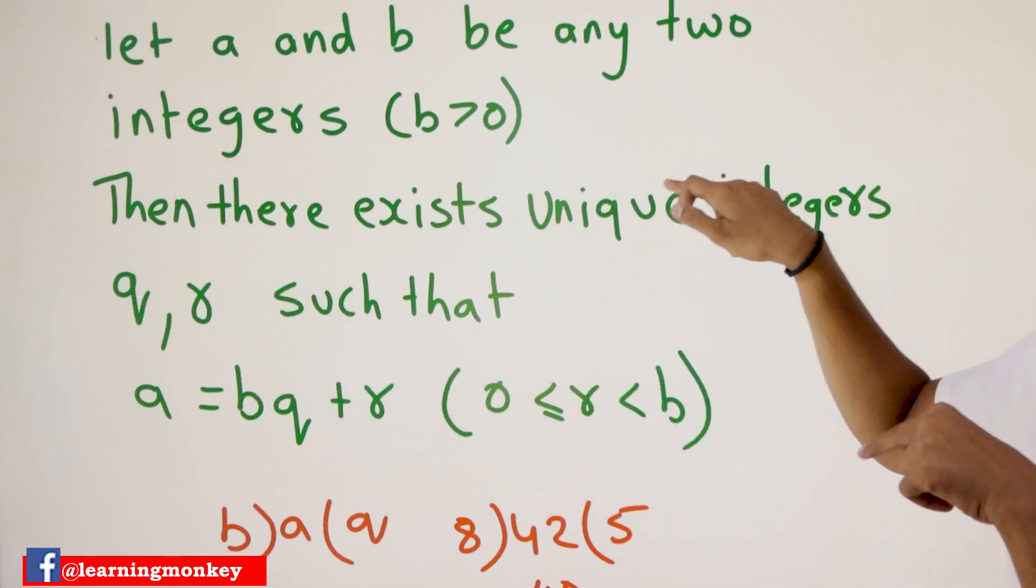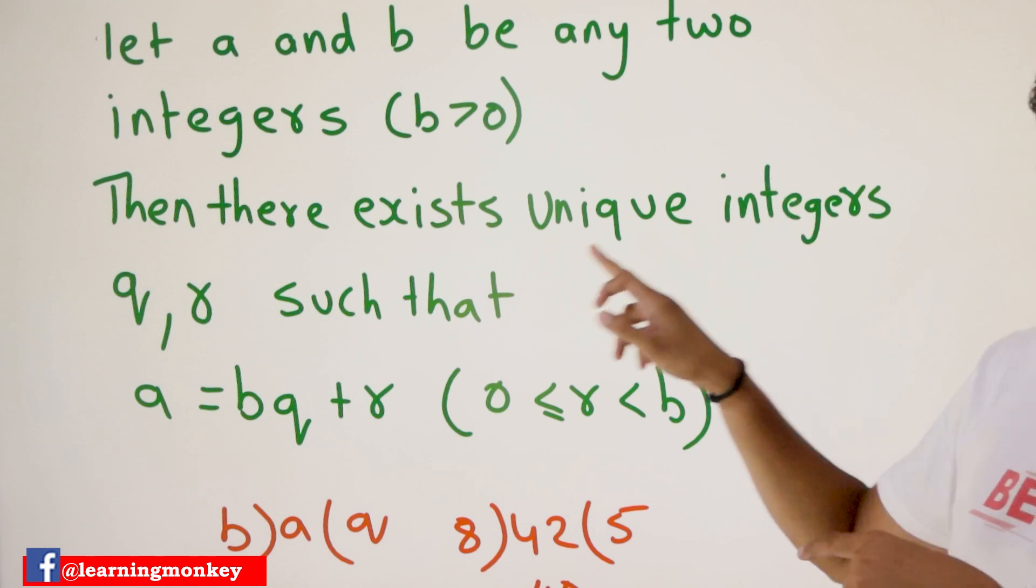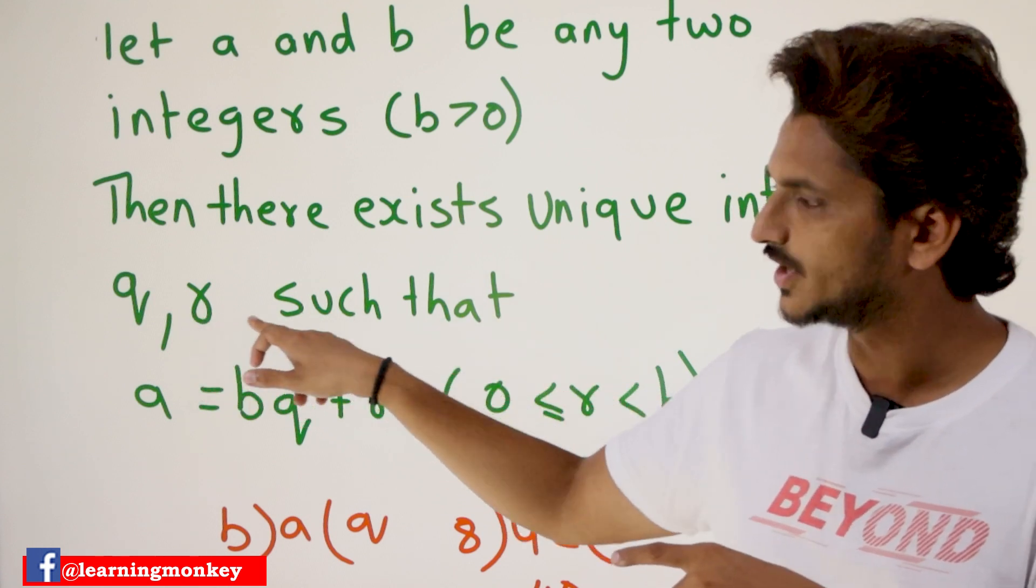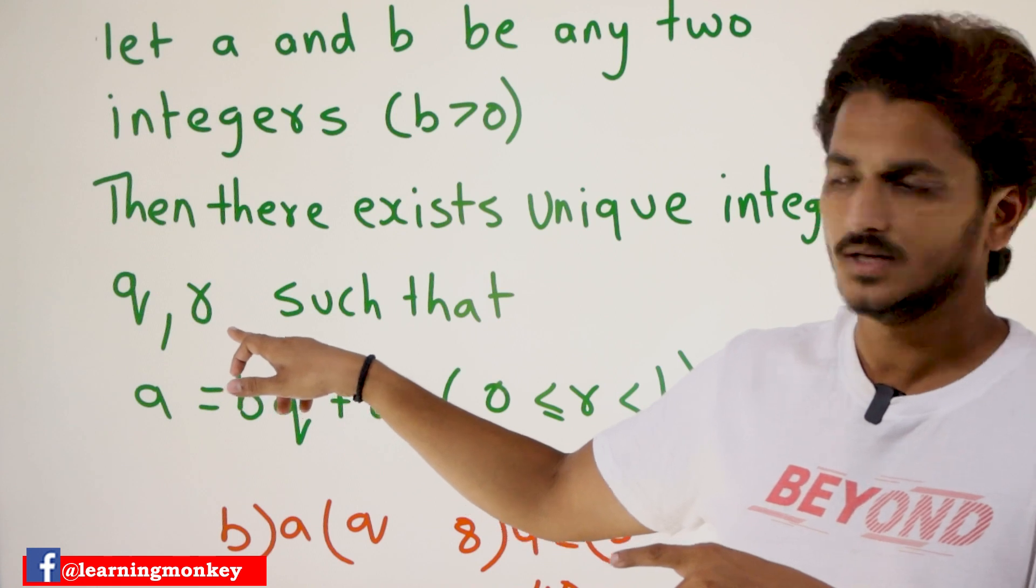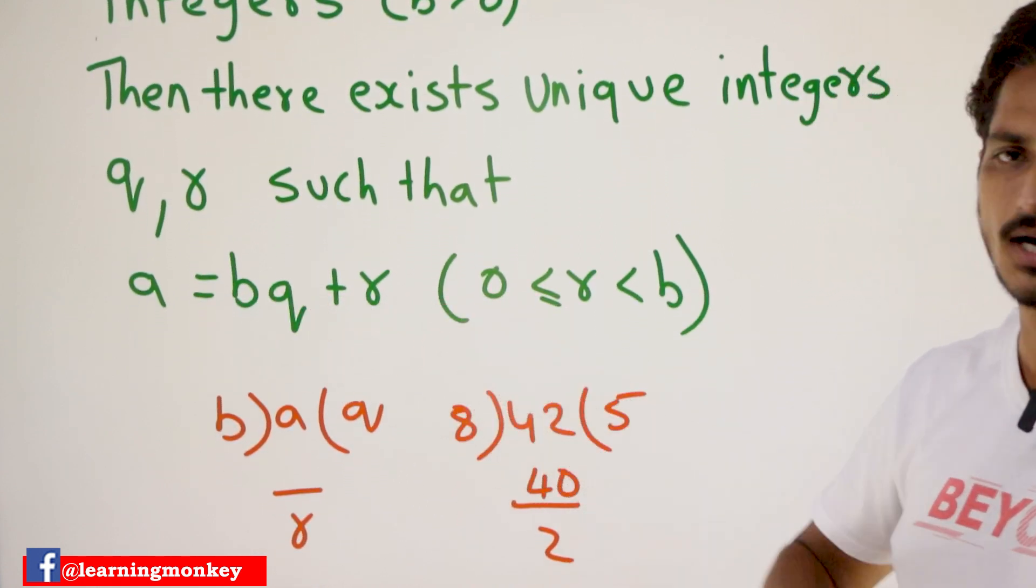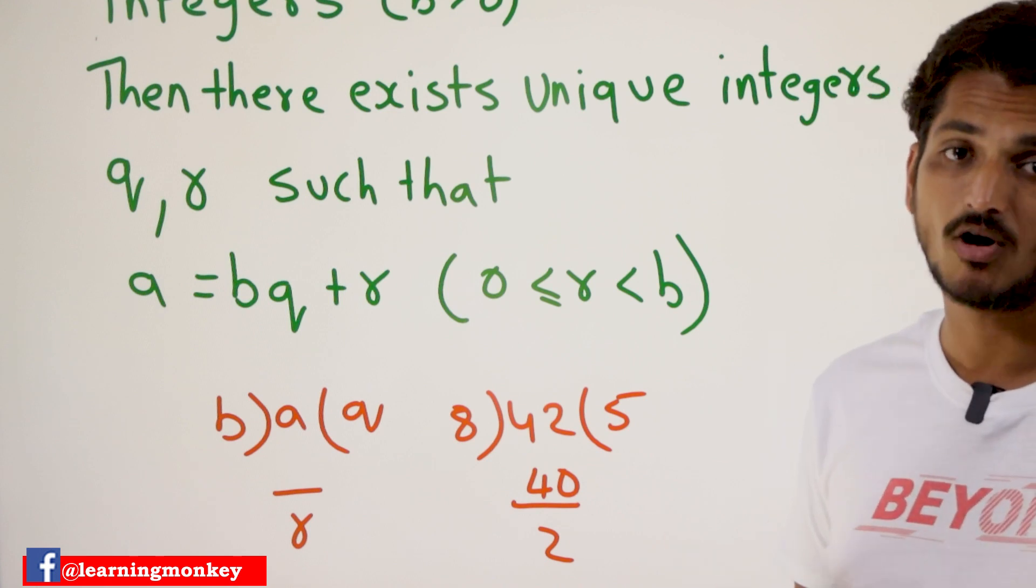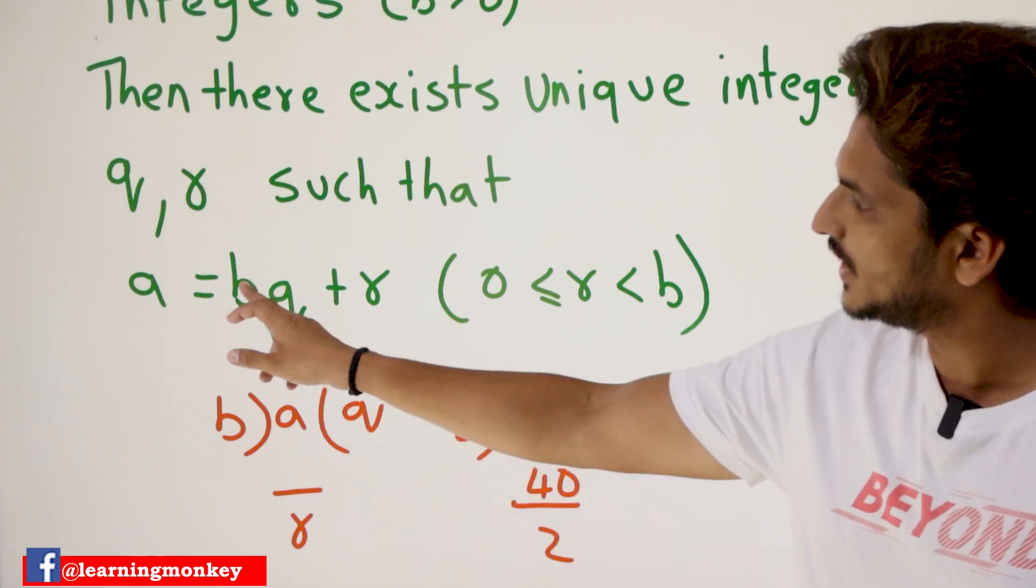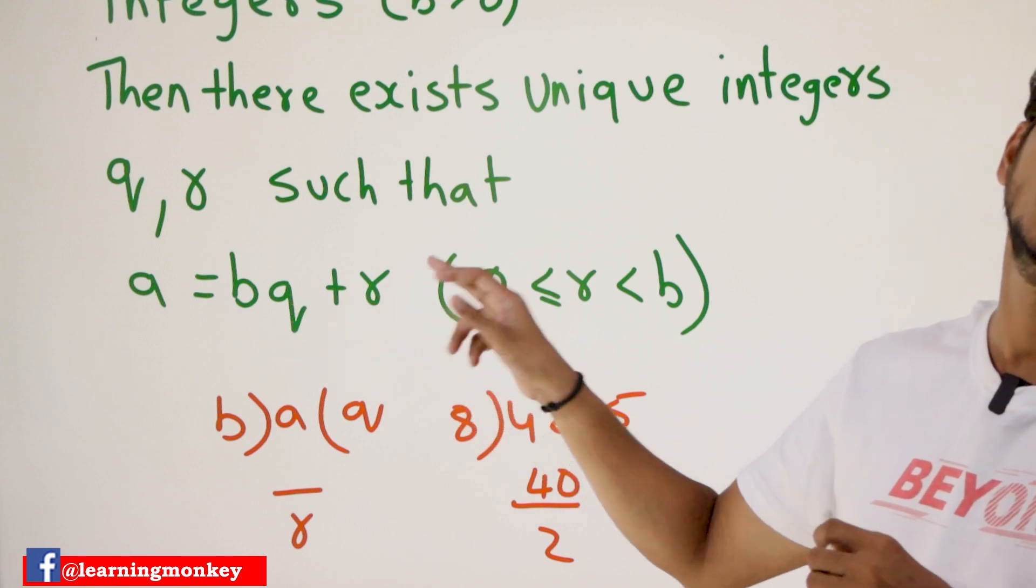There exist unique integers Q comma R. These are unique, such that A is equal to BQ plus R. So we can write A equals B multiplied by Q plus R.